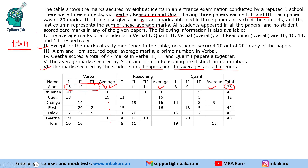We are given some more data. The average marks of all students in Verbal 1, Quant 3, Verbal overall, and Reasoning overall are given. Since there are 8 students, we multiply these numbers by 8 to get the totals. So Verbal 1 total will be 128, Quant 3 total will be 80, and Verbal overall as well as Reasoning overall total will be 112 each.